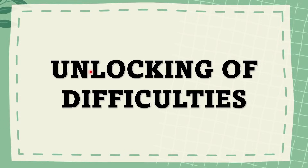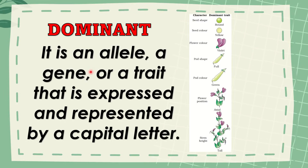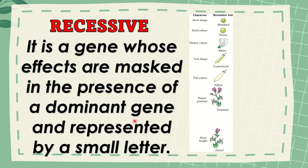Before we proceed, let's have an unlocking of difficulties. First word: dominant. In genetics, dominant is a term used to describe an allele, a gene or a trait that is expressed, and it is represented by a capital letter, just like our example. On the other hand, we have recessive. It is a gene whose effects are masked in the presence of a dominant gene and is represented by a small letter, just like our example.